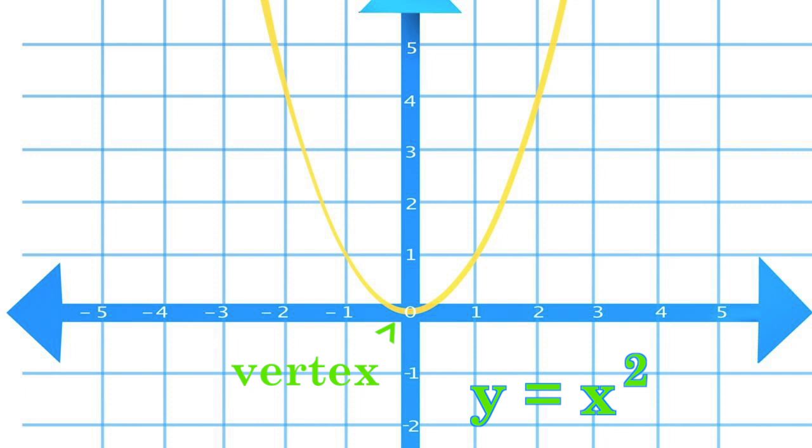On a coordinate plane, we can create a parabola with its vertex at the origin by graphing the equation y equals x squared.